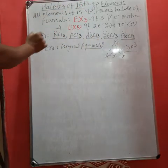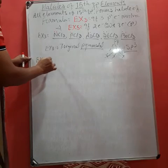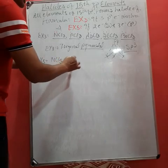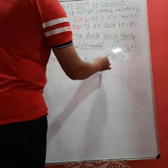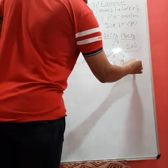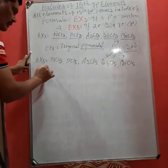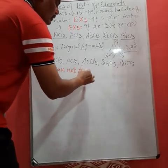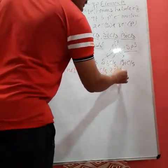Now, if we deal with EX5, then the EX5 will be, can we write NCl5, can we write PCl5? So the last one is AsCl5, SbCl5, and the last one is BiCl5. But the problem is that nitrogen cannot form NCl5. Now, the question is why?